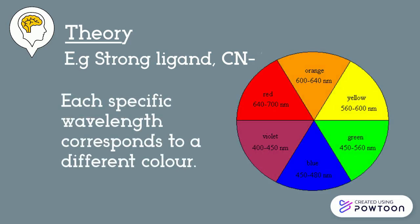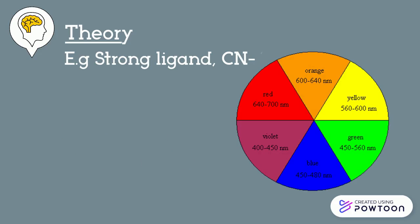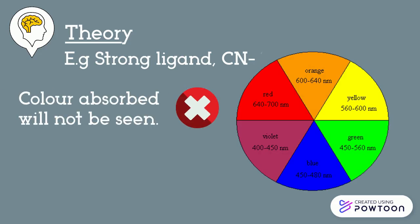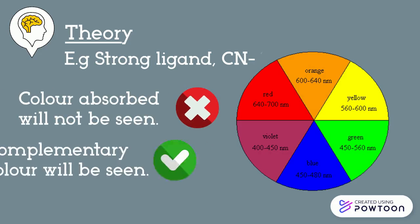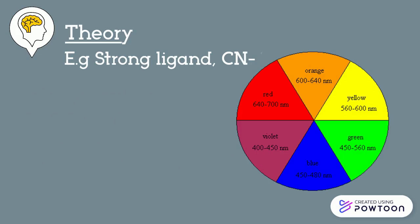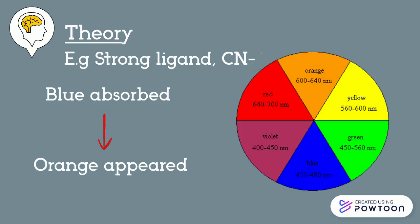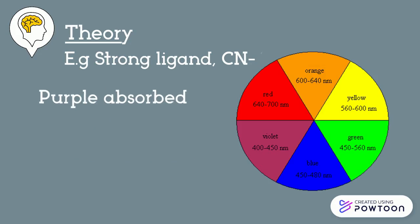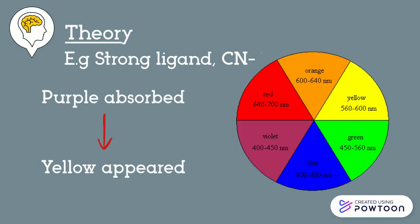Each specific wavelength corresponds to a different color. Based on the color wheel, blue or purple color will be absorbed. However, this color will not be seen by our naked eyes. Instead, the color in the opposite direction of the color absorbed will be observed. So if blue is absorbed, an orange solution will appear. If purple color is absorbed, a yellow solution will appear.